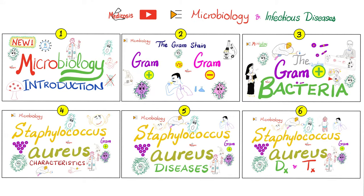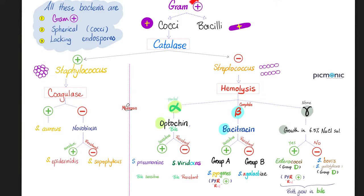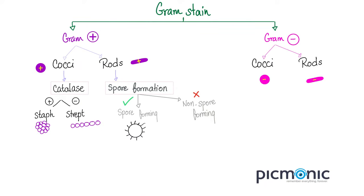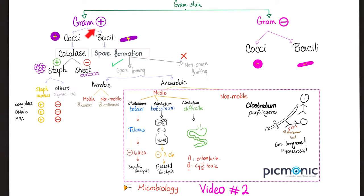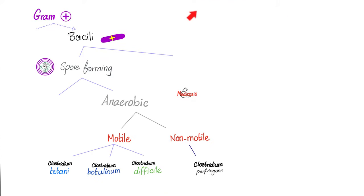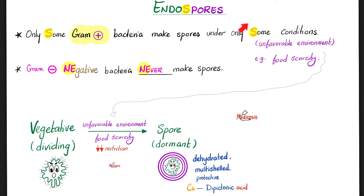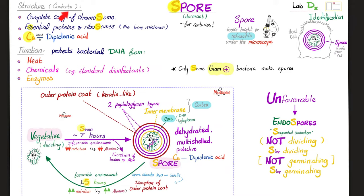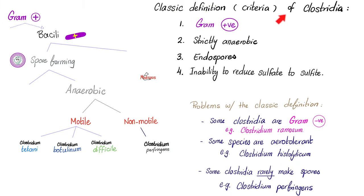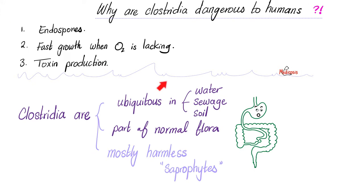Please watch the videos in this microbiology and infectious diseases playlist in order. Clostridium tetani is a gram-positive rod, spore-forming, strictly anaerobic, yet motile, and causes the disease known as tetanus. It can make spores, which are protective to the bacteria under unfavorable circumstances. The classic definition of Clostridia includes a gram-positive organism that is strictly anaerobic, produces endospores, and is unable to reduce sulfate into sulfite. They are problematic because they are all over the place — they can make spores, make toxins, and grow even when there is no oxygen.